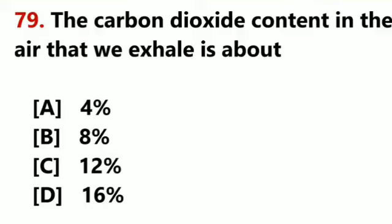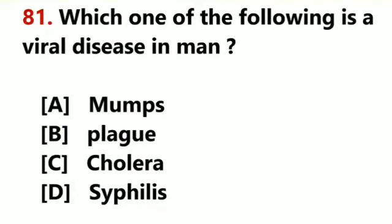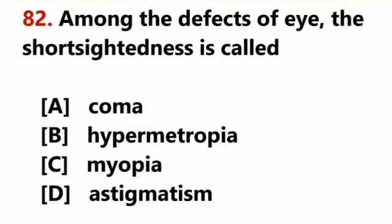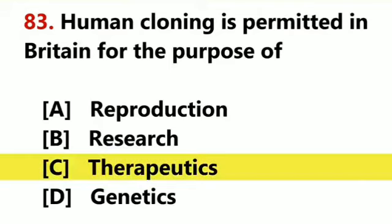The carbon dioxide content in the air that we exhale is about 4%. The large amount of sugar present in human blood is glucose. Which one of the following is a viral disease in man? Mumps. Among the defects of eye, short-sightedness is called Myopia. Human cloning is permitted in Britain for the purpose of therapeutics.